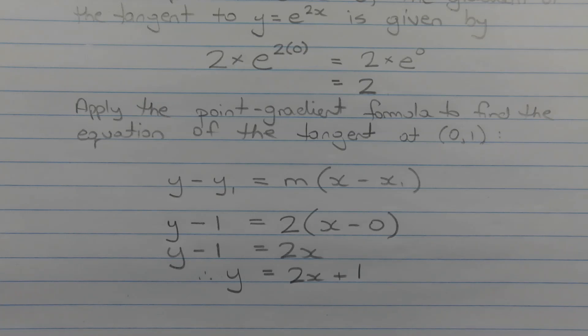Substituting those values into the point-gradient formula, we get y - 1 = 2(x - 0). Expanding the brackets on the right-hand side, we get y - 1 = 2x.